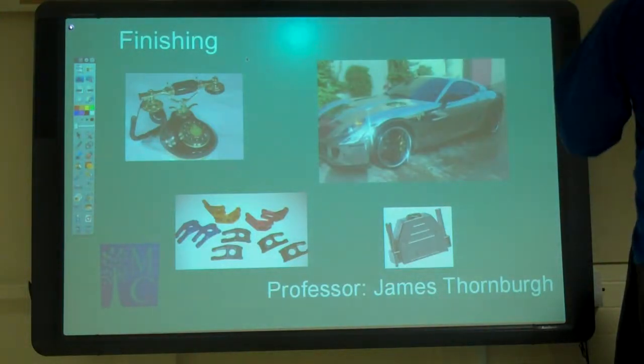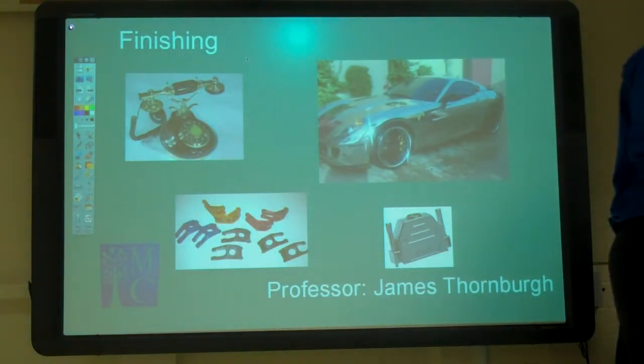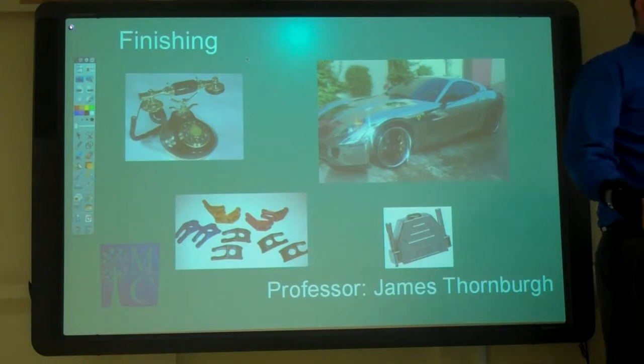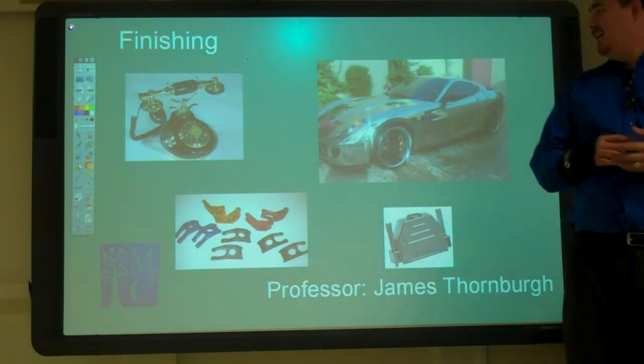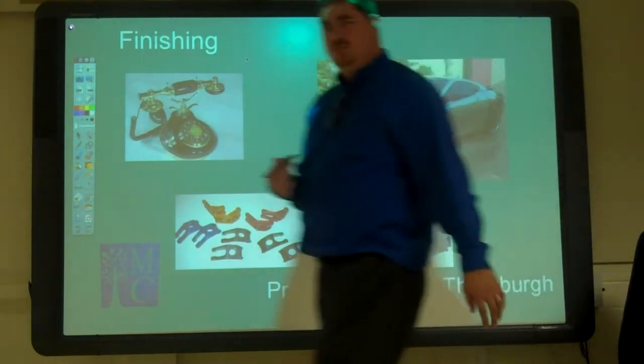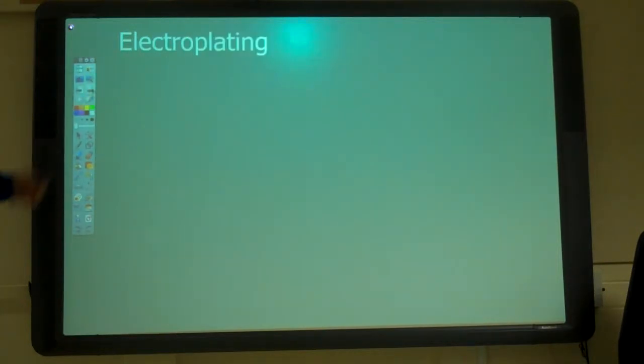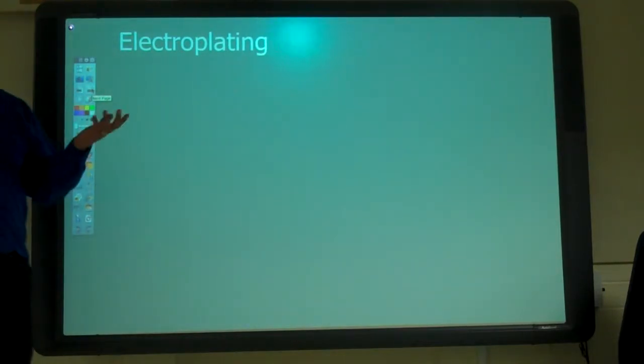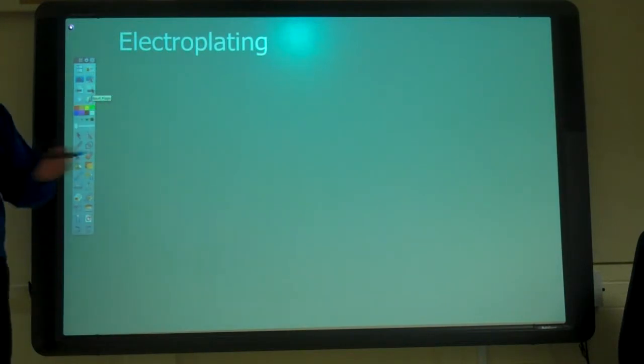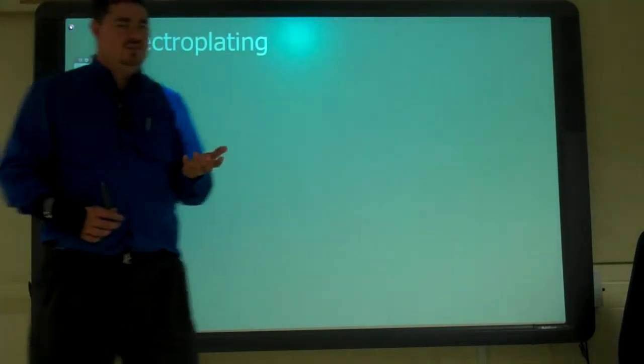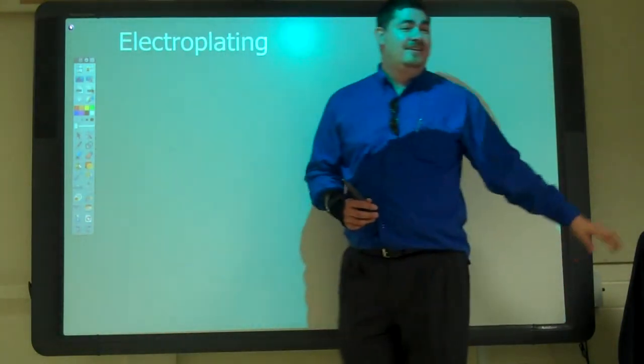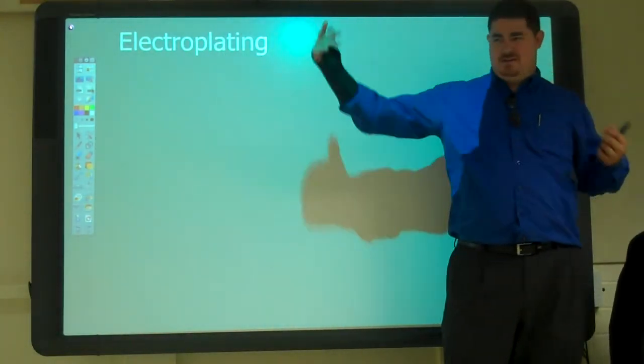Alright, so finishing is just protecting, it's making it look nicer. So what was the key in electroplating? Electricity and then water, right, so we can move the metals. Why do they use electricity in it? To transfer. Yeah, because it makes the stuff move.